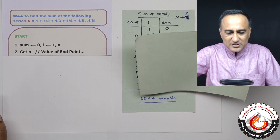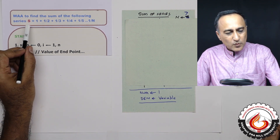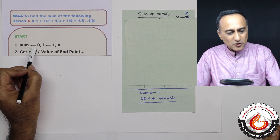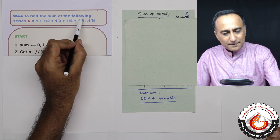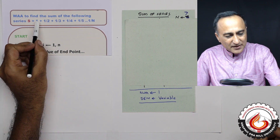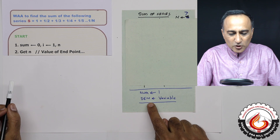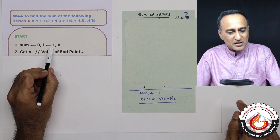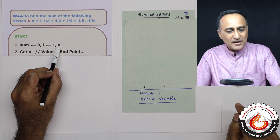If you look at this particular series, you will notice that you will require one variable called sum, given the initial value 0. The numerator is always 1, so I do not need to take any variable for it. But the denominator, starting from 1, is increasing by 1 every time, so the denominator has to be a variable. I will give the denominator the variable name i with the initial value 1, and this endpoint n I shall give the variable name n.